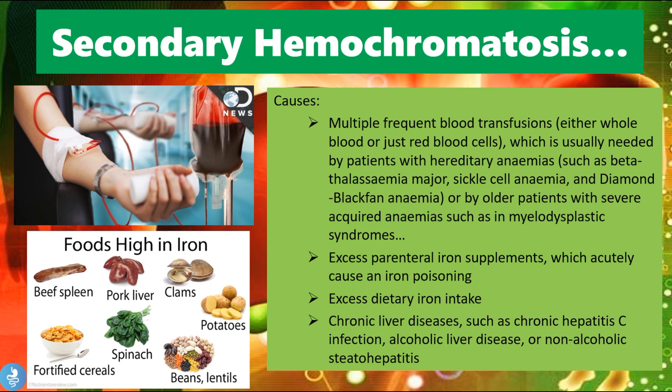Another cause is excess parenteral iron supplements, which can acutely cause iron poisoning. We can also have excess dietary iron intake from eating too many iron-rich foods such as beef spleen, pork liver, clams, potatoes, beans and lentils, spinach, and fortified cereals. The last cause of secondary hemochromatosis is chronic liver diseases such as chronic hepatitis C infection, alcoholic liver disease, or non-alcoholic steatohepatitis.